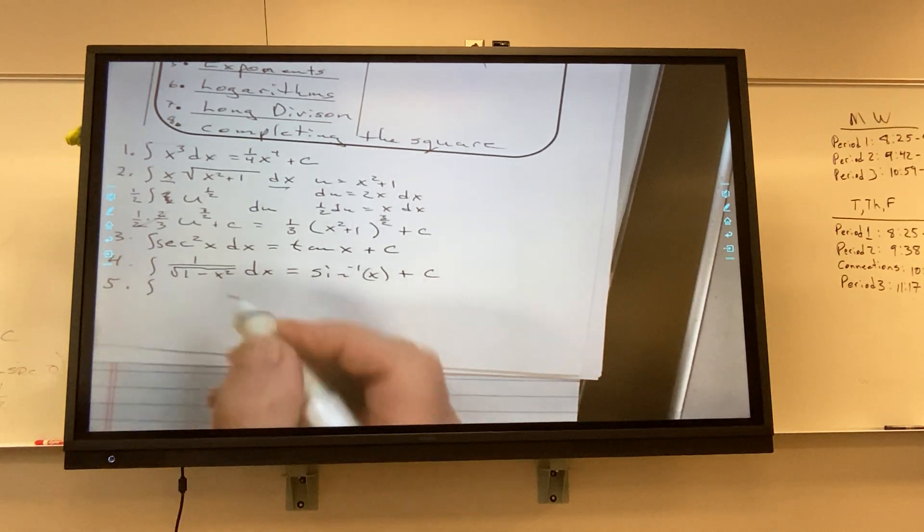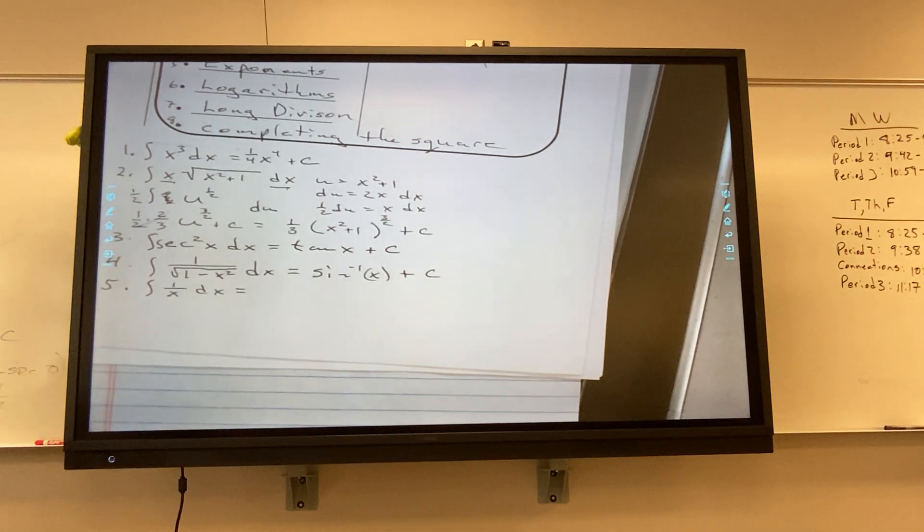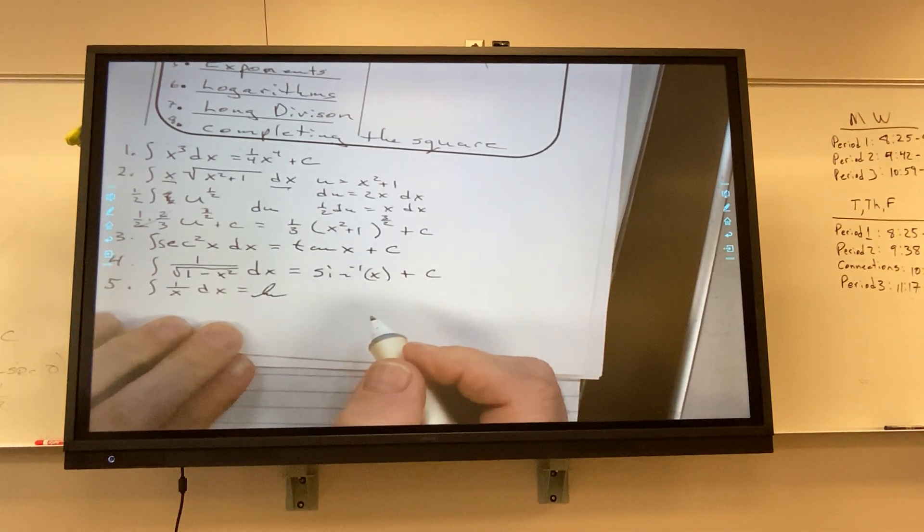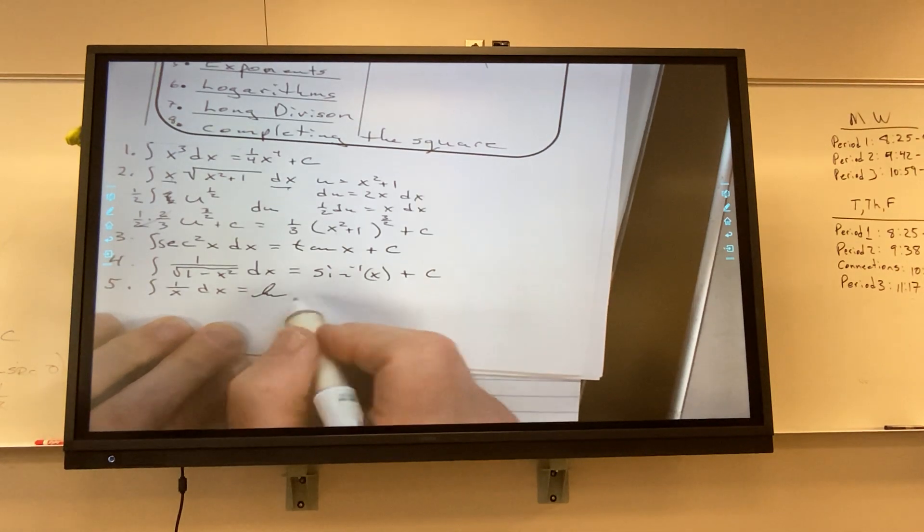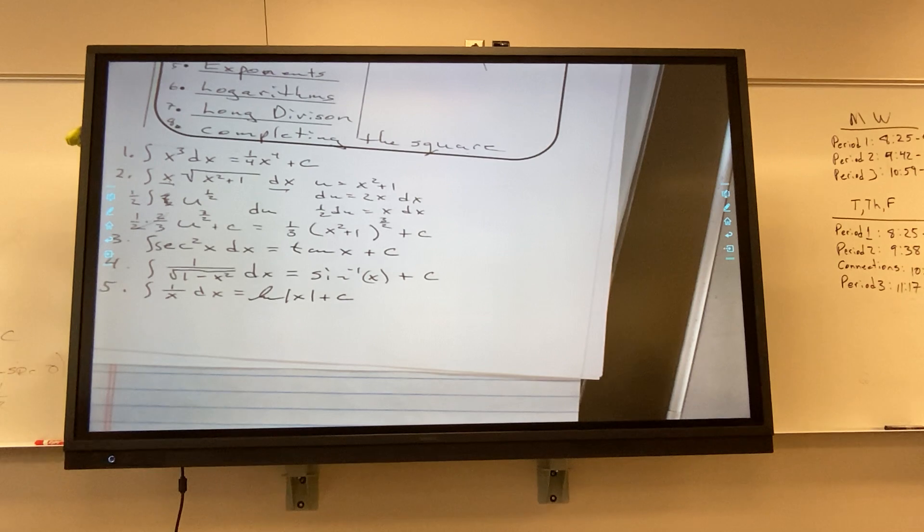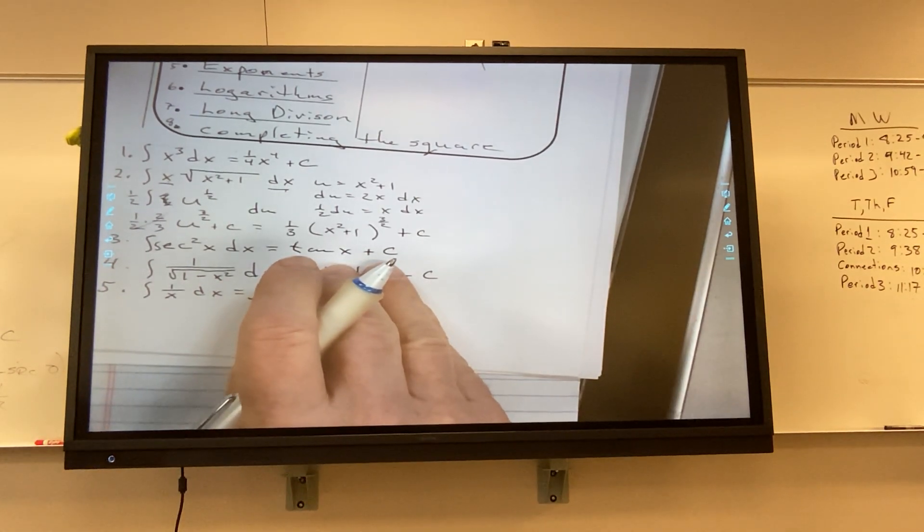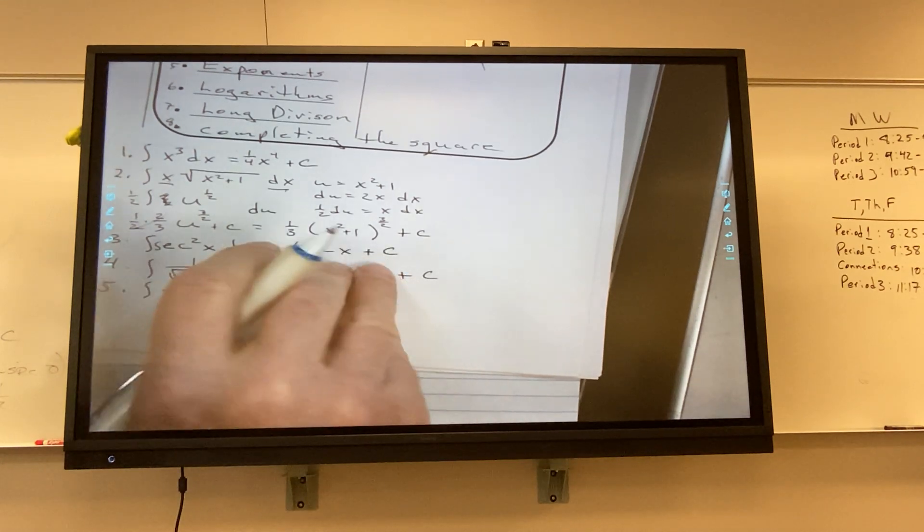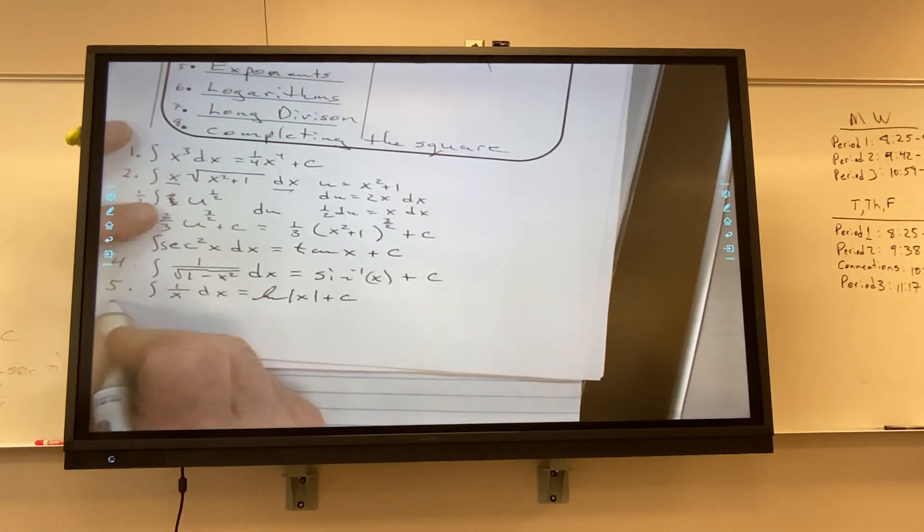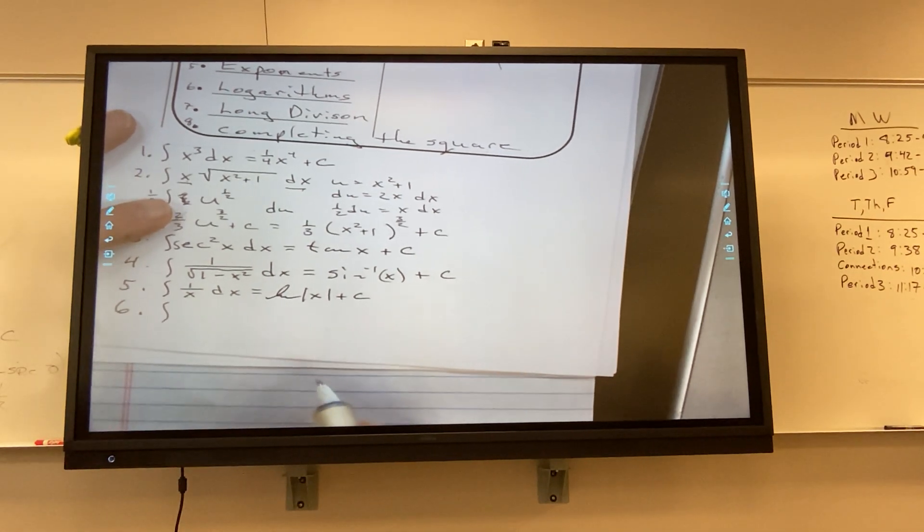Number five, this is Audrey. Absolute value. Great. I skipped something, I skipped exponents, sorry. I'll let you get exponents.